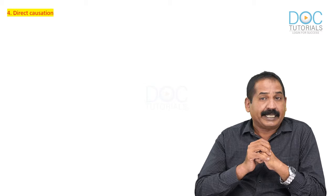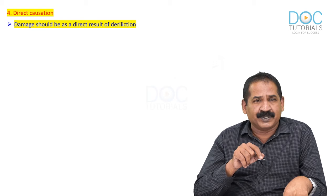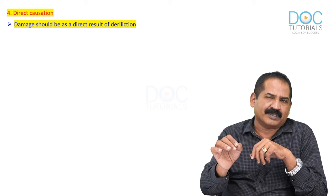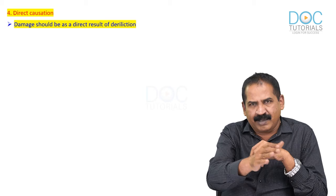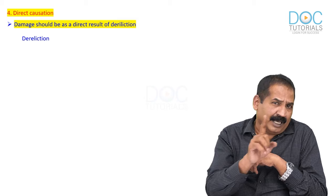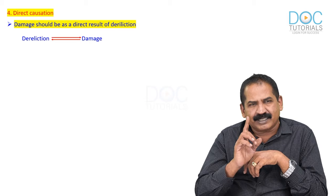Number four is direct causation. Damage should be a direct result of dereliction. For example, I give an injection of penicillin without a test dose and the patient dies of anaphylactic shock — the damage is death, the dereliction is not giving the test dose. That is direct causation: dereliction should result in damage, and damage should have resulted from dereliction.